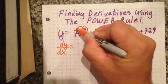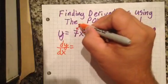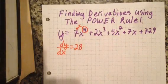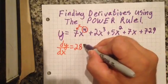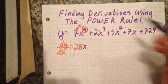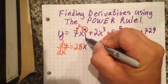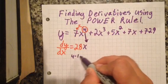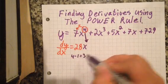And that will give you 28. X comes down, but to what power? The power rule breaks that 4 down by one level, so 4 minus 1 equals 3. It's going to be 28x to the third power.